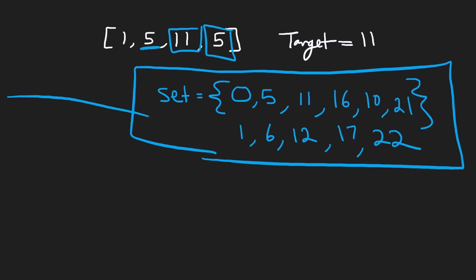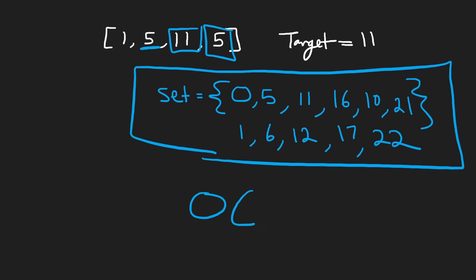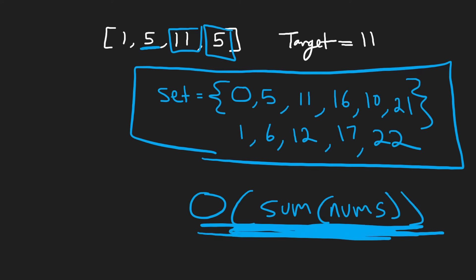Now I think in practice the size of the set is probably going to be about the same size as the cache that we would use in the memoization technique. But technically the size of this cache is going to be limited to the size of the target, which is basically limited by the sum of the nums input array. So this is going to be the memory complexity in this case. The time complexity is going to be the same, but this solution is definitely easier to code. Going through the brute force to the caching to the dynamic programming solution is the best thought process to arrive at this optimal solution. So now let's jump into the code.